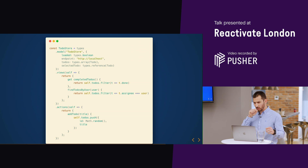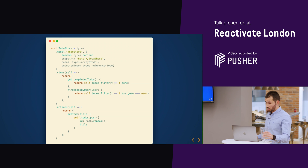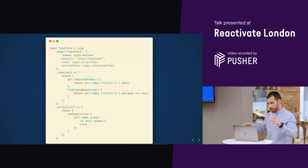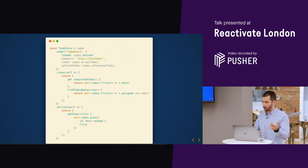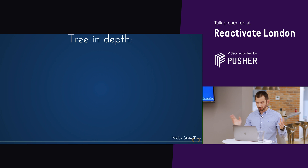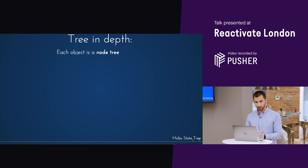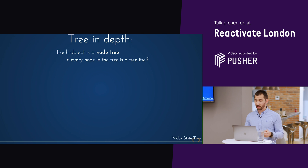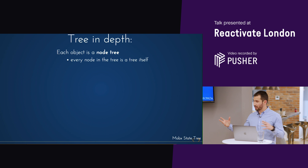This is the full example altogether — you can see the model, the views, and the actions. There are no reactions here since they are the same as a view but just for handling side effects. To conclude, on the tree in depth: every object declared is a node tree, and every node in a tree is itself a tree. So you can nest them, compose them, and have whatever structure you prefer — composing and extending those objects.